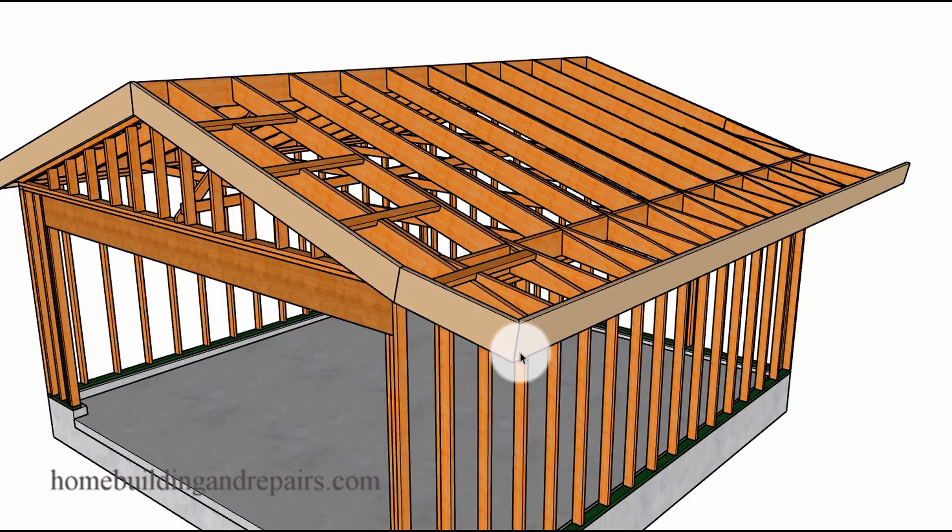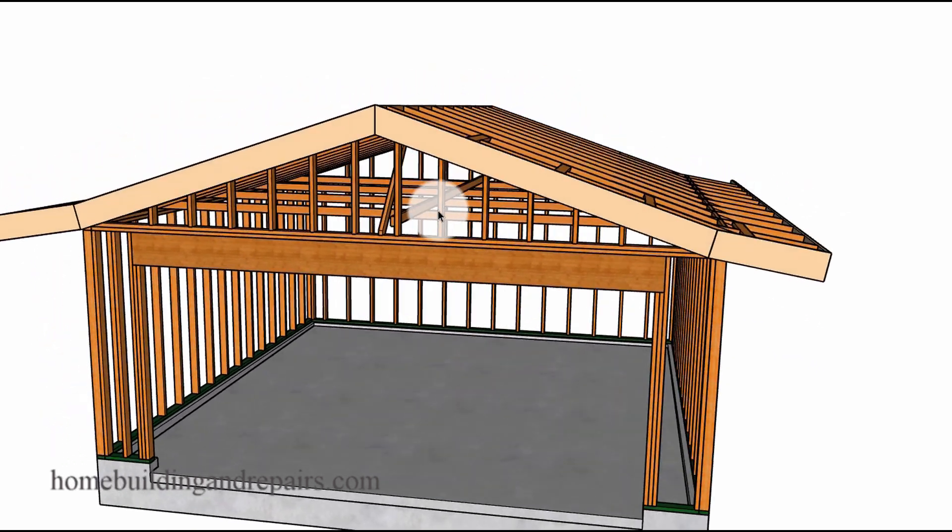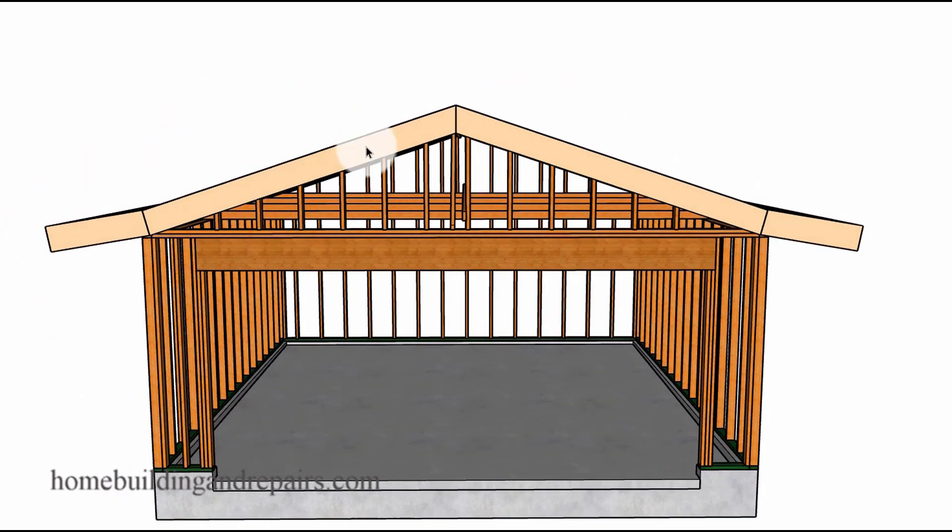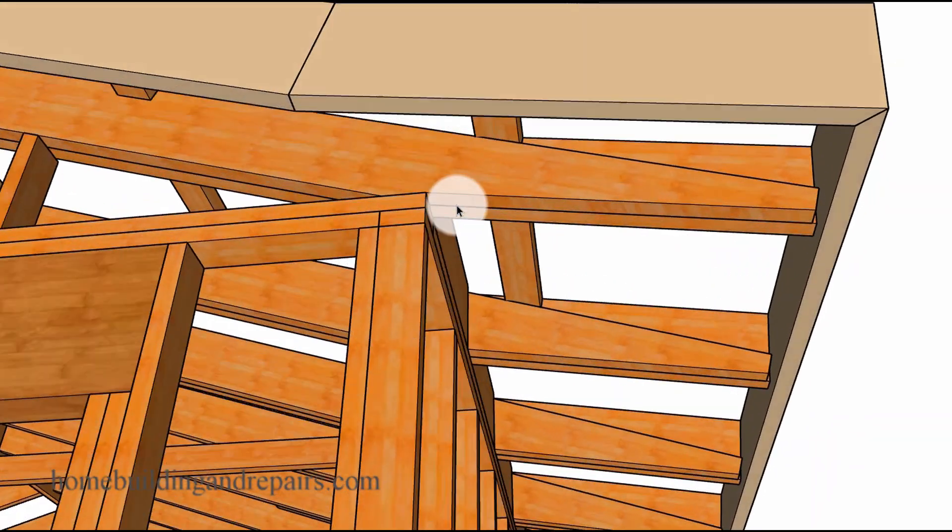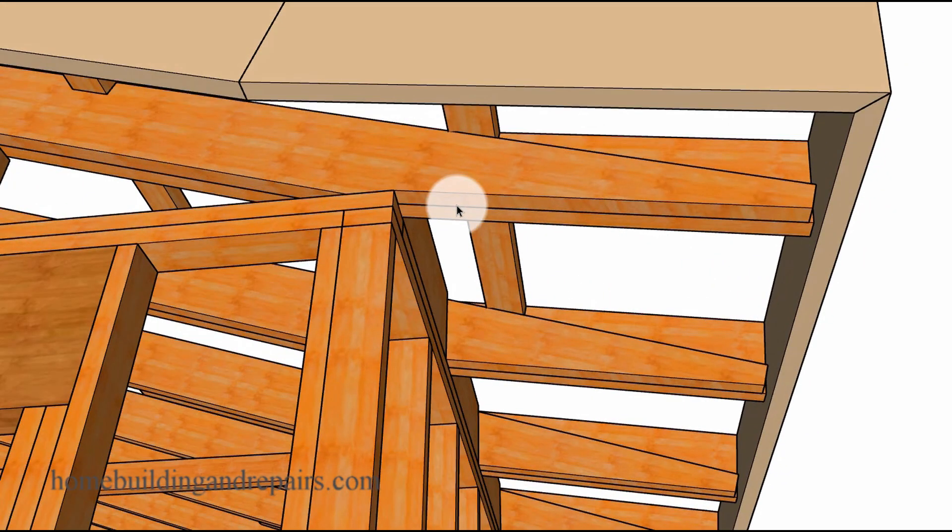We have about a two foot overhang coming out in this direction and about a one foot overhang coming out off of the gable end. In our first example we're going to be making a roof that is going to be a little stronger and something that wouldn't look as attractive from below and might require some type of soffit covering.